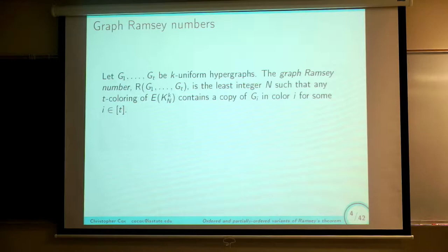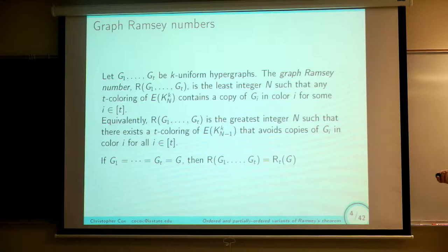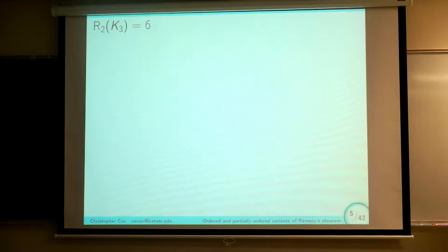Ramsey's theorem says that eventually this monochromatic copy will be there. Equivalently, the Ramsey number is also the greatest integer such that I can color the complete graph of order one fewer and actually avoid monochromatic copies of each of my graphs. For notational purposes, if all of the G_i's happen to be the same graph, we write R_T(G) — we're looking for the exact same graph in each color. We refer to this as the diagonal case; if some G_i's are different, we call it the off-diagonal case. With graph Ramsey theory, you have to talk about the two-colored Ramsey number of the triangle, which is 6.